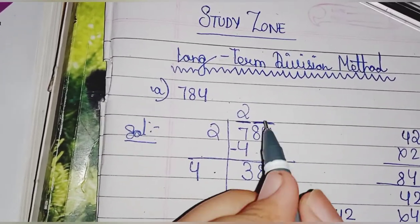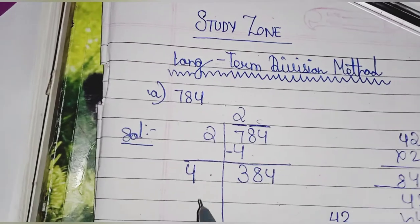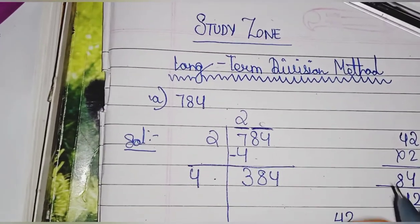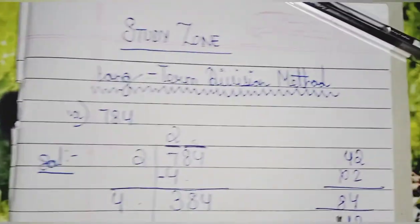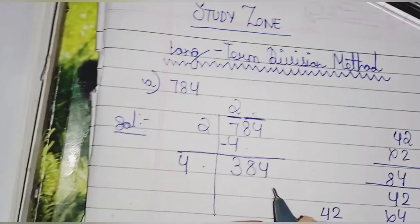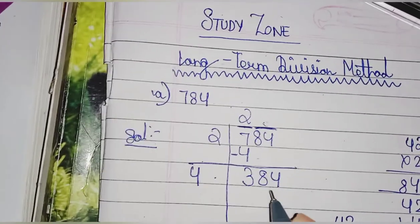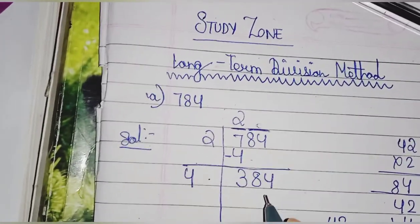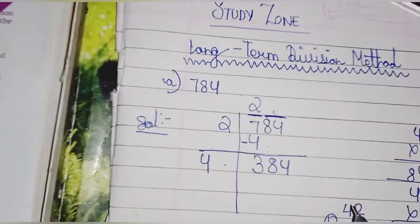Now if you take 42×2, it will be 84, which is very much less than 384. So we will try another number.